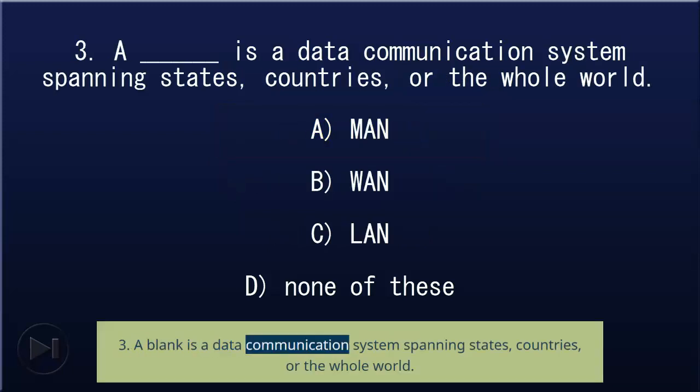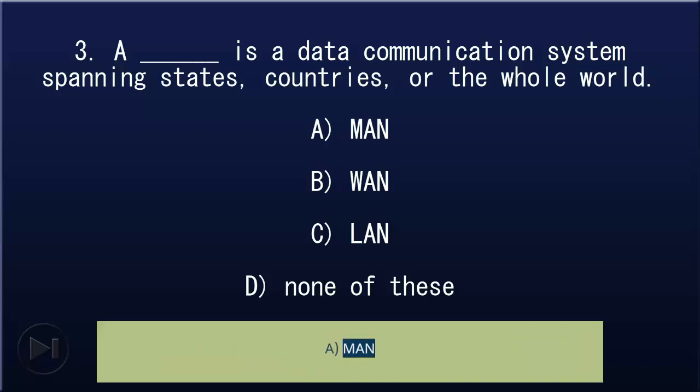3. A blank is a data communication system spanning states, countries, or the whole world: A) MAN, B) WAN, C) LAN, D) none of these. Answer: B, WAN.